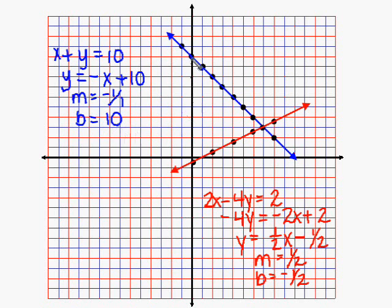7, 3 appears to be a solution because it appears to be on both lines at the same time. Now, let's look at that graphically.